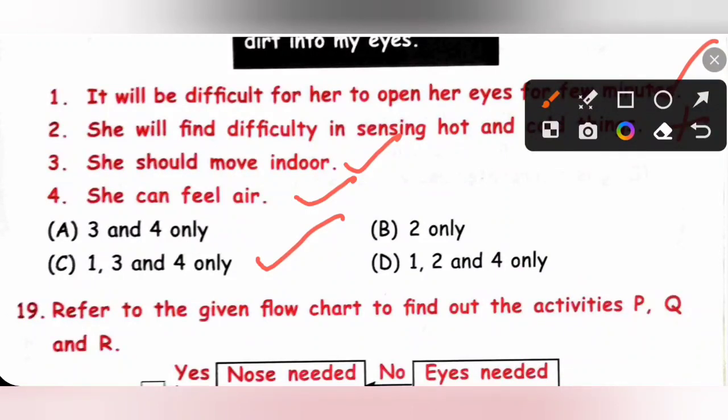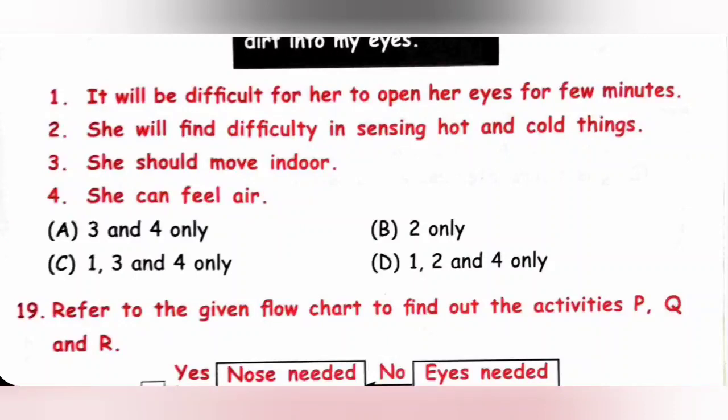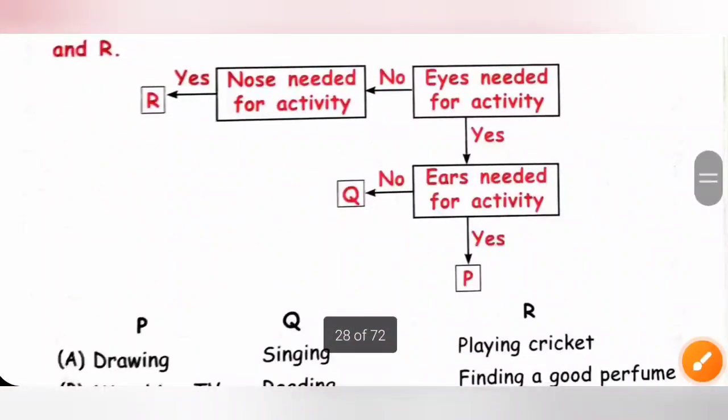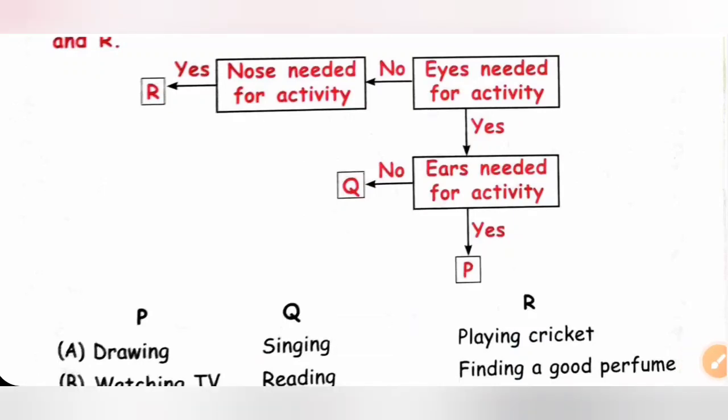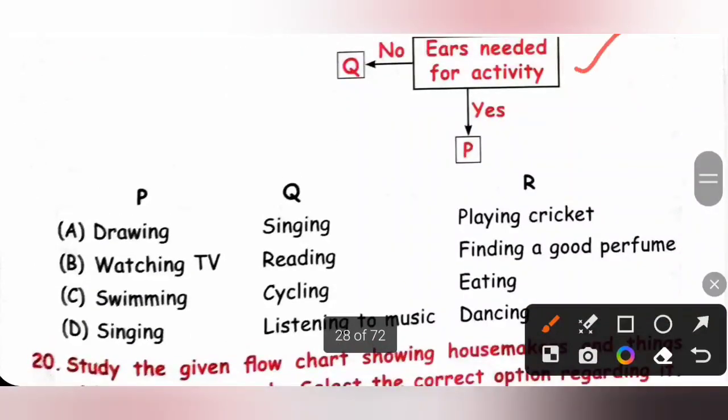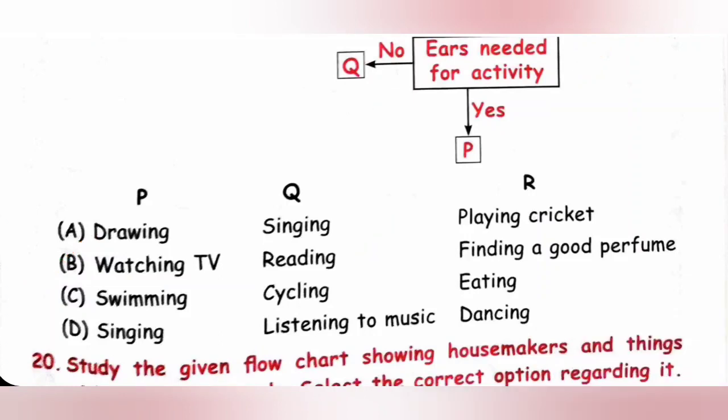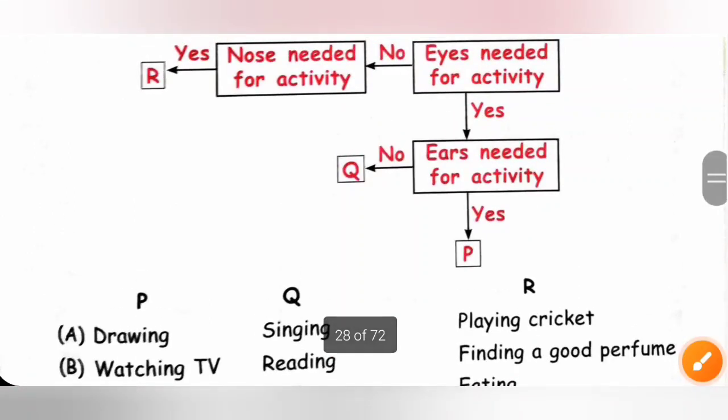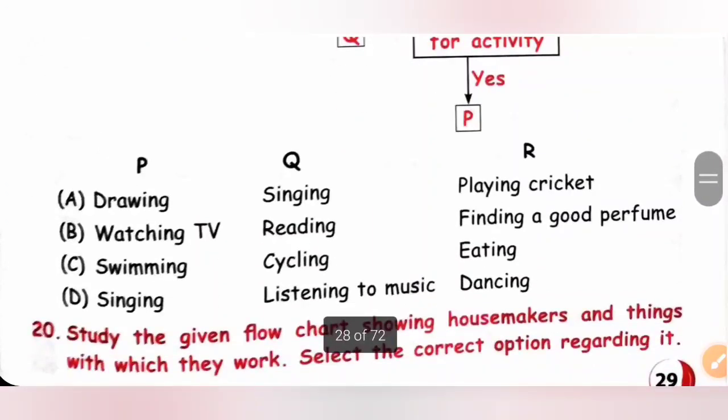Nineteenth. Refer to the given flow chart to find out the activities P, Q and R. So, P is the activity where ears are used. Q is the activity where ears are not needed. And then R is the activity where nose is needed but eyes are not needed. So, that is finding good perfume. So, option B is the correct answer.